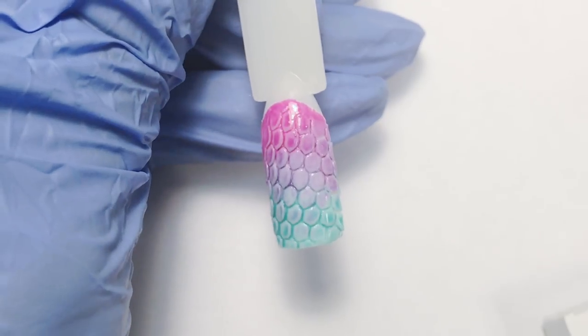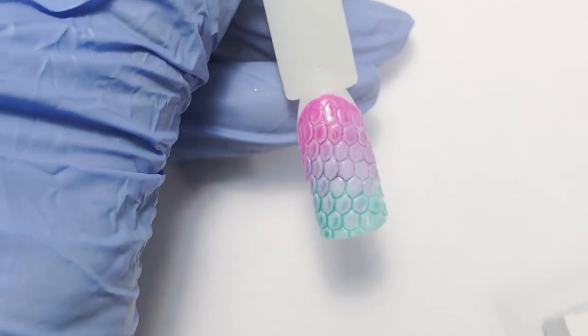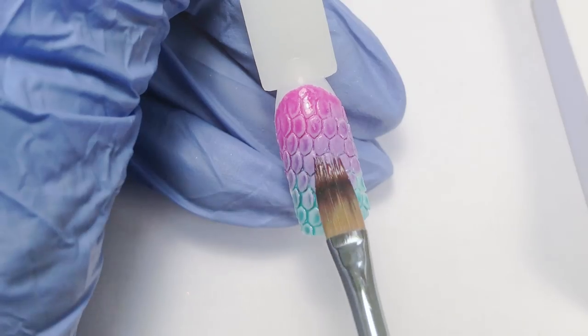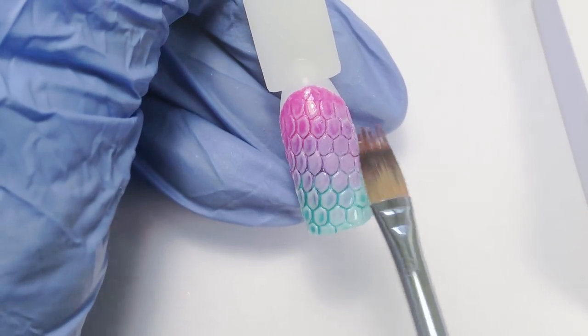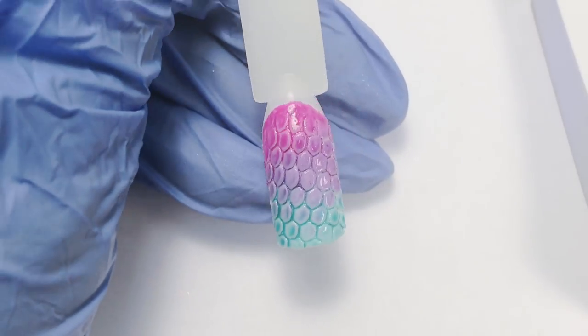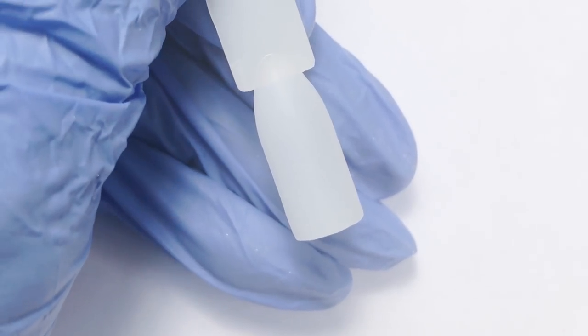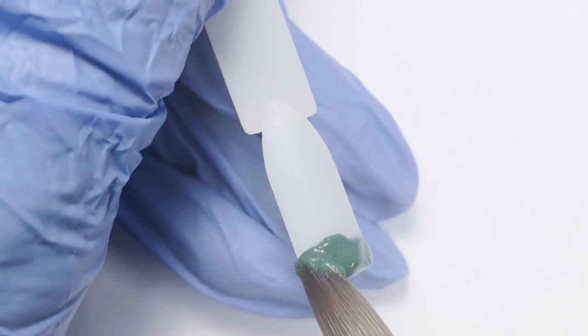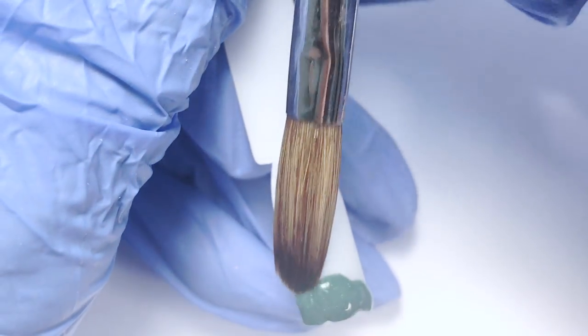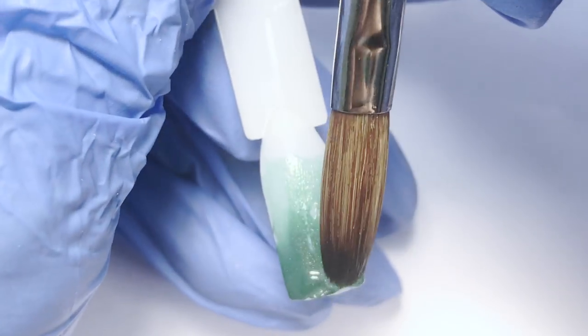It's up to you - you can leave it like this, or I decided to add more color. I mixed this pink with green on a brush and then added additional color. Then we need to cure it again. This is another option if you feel confident about ombre. If you don't, feel free to click the link on the upper right corner and watch my ombre webinar.